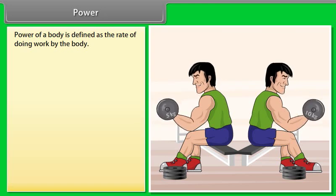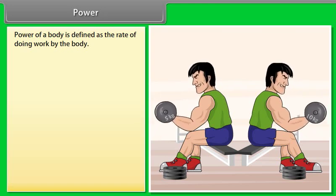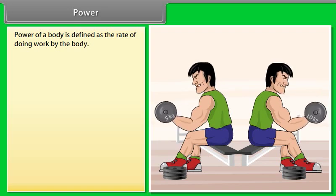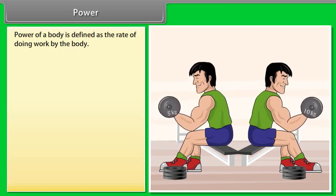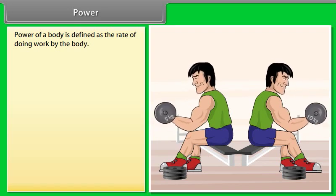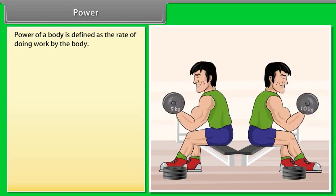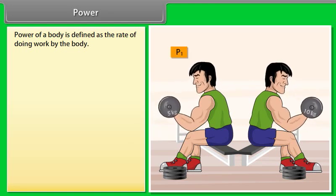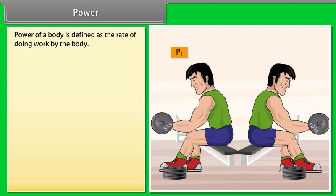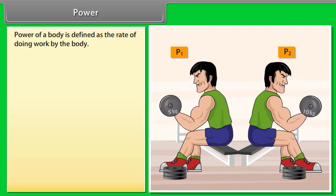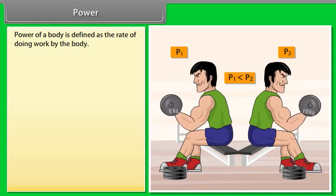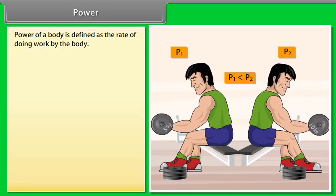Power. Power of a body is defined as the rate of doing work by the body. Let us take an example: a boy doing exercise by using dumbbell. When he used the dumbbell of 5 kg, then he applied power P1. And when he used the dumbbell of 10 kg, then he applied power P2. Hence, the power rating is high when he used the dumbbell of 10 kg as compared to the dumbbell of 5 kg.